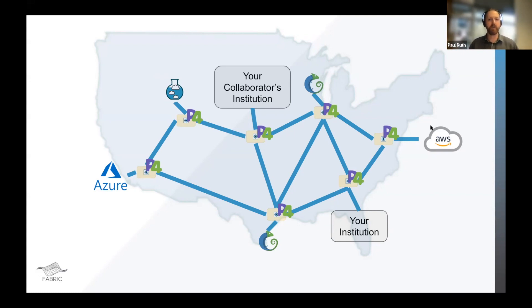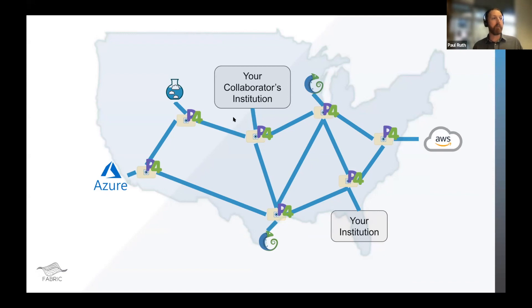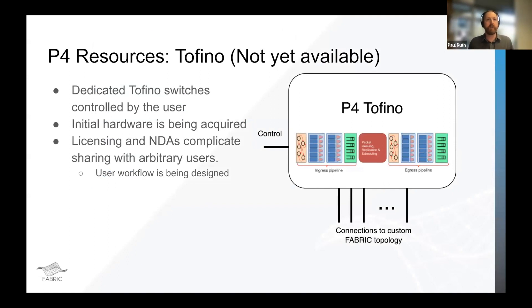The challenge for us is figuring out how to allow you to have P4 resources in these places while sharing them among users — like a batch scheduling style for a network resource. Different types of resources will be available at these sites: software switches as Casey mentioned, Tofino switches, or Xilinx FPGAs that can act as P4 switches. Everyone wants Tofino switches when they say P4, but those aren't yet available on FABRIC. When we do have them, there will be dedicated Tofino switches in the racks at most of the sites, and you'll be able to insert your compiled P4 program and connect your controller to it just as if you owned it.